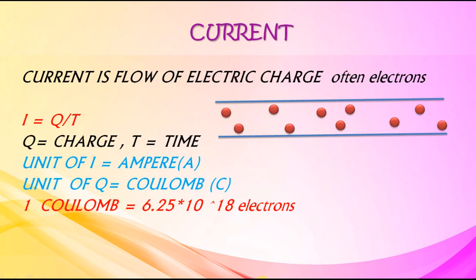Current is flow of electric charge in electrical circuits. Flow of charge is often due to movement of electrons. I equals Q by T, where Q equals charge and T equals time. Unit of current is ampere, and unit of charge is coulomb.